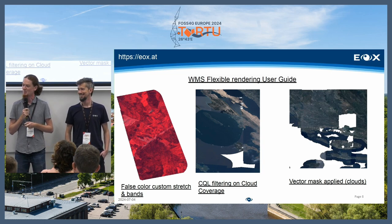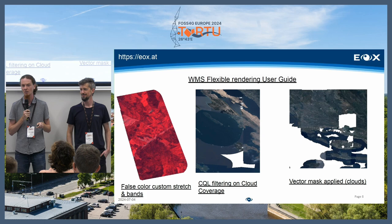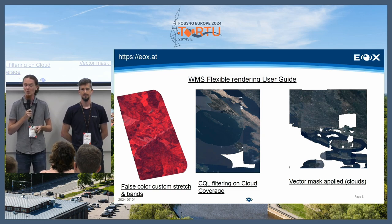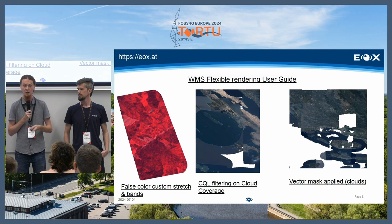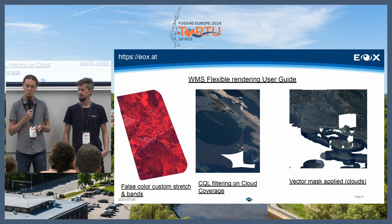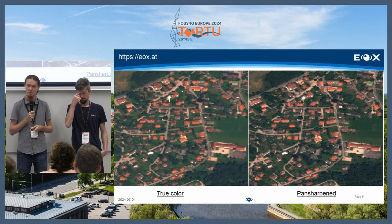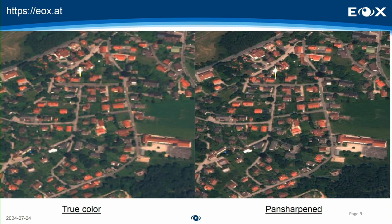On the left side you see a false color composite — you define a set of bands for the red, green, blue result with a custom stretch. The middle example shows CQL filtering based on cloud coverage: when we register cloud coverage metadata, we can use it in the WMS request to filter just a subset of products. The last example is from an existing project using vector masks for masking out clouds. Another example is using pan sharpening on the fly using GDAL's pan-sharpen functionality, combining the panchromatic band and the true color low-resolution band to produce a pan-sharpened image.